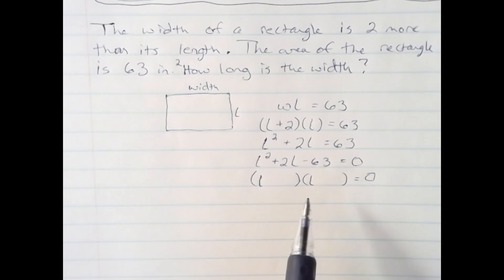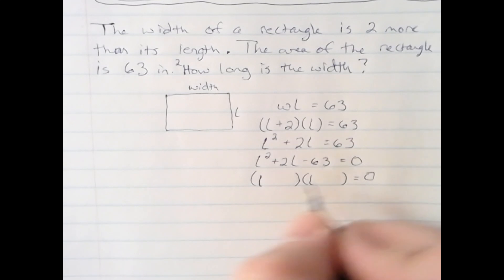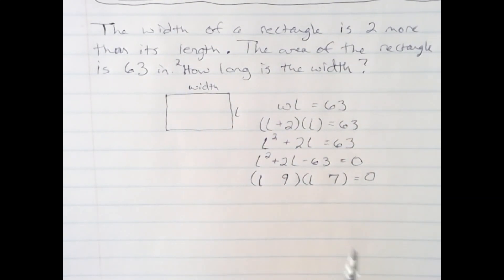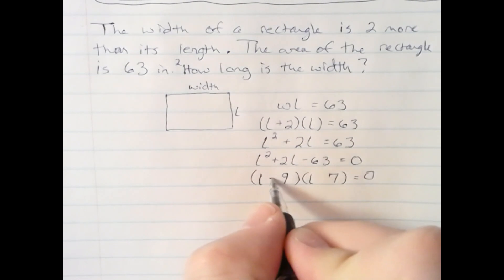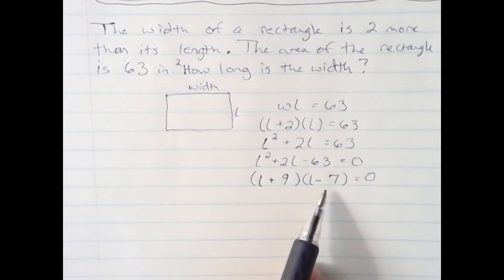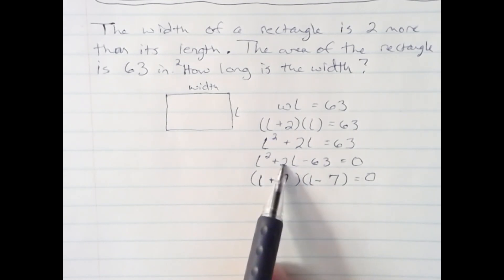Well, I know 9 times 7 is 63, and they are only two apart. So I know 9 and 7 will work. I just have to get my signs right. And I know it's going to be a plus 9 and a minus 7, as opposed to a minus 9 and a plus 7, because this combination, plus 9 and minus 7, add up to the middle term, plus 2. That's the one that works.